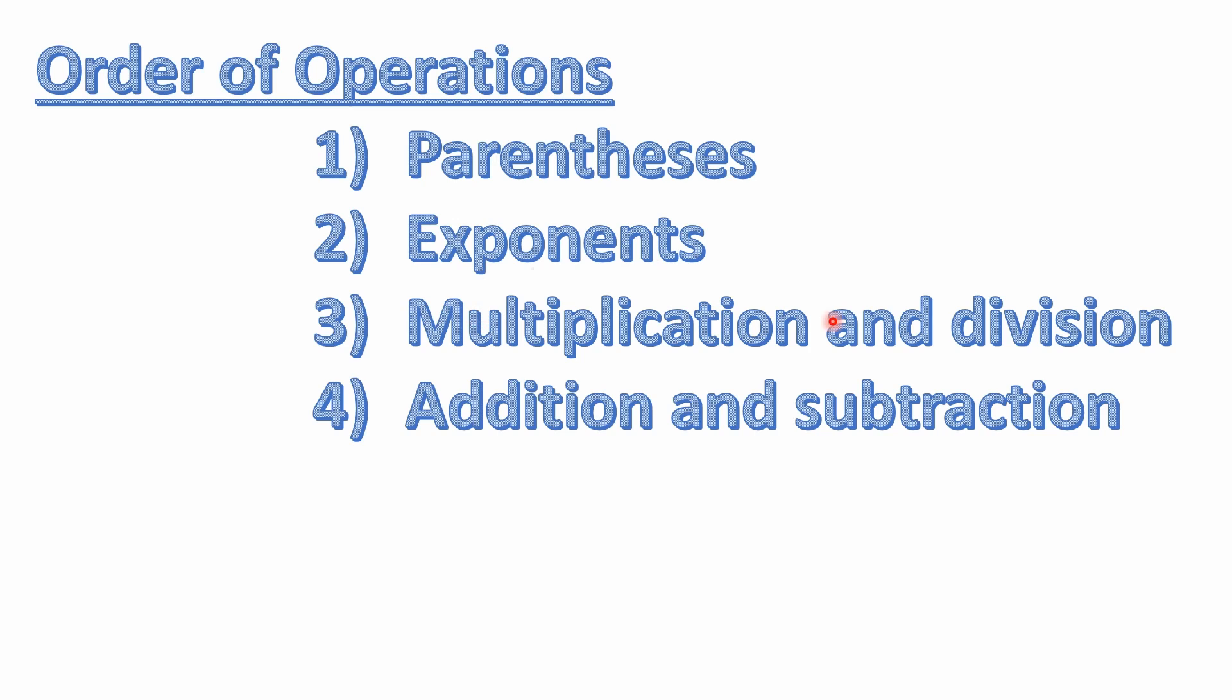The third step here would be multiplication and division solved left to right. Multiplication and division have equal precedence. And then the fourth step is addition and subtraction left to right. And once again, addition and subtraction also have equal precedence. So we want to keep that in mind as we solve.